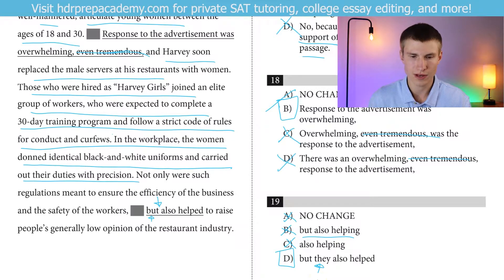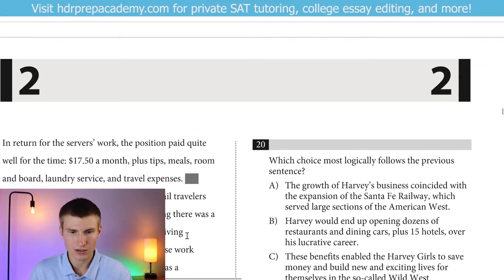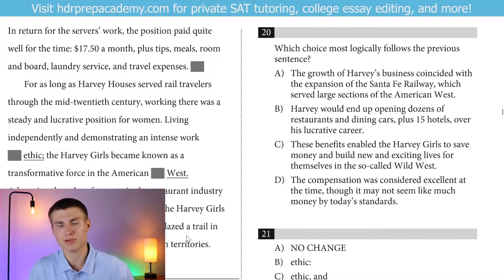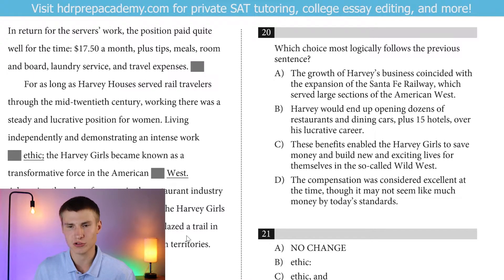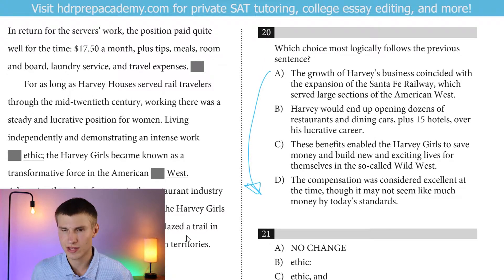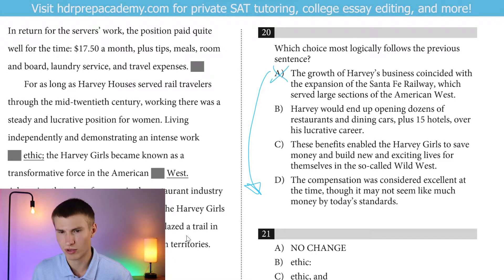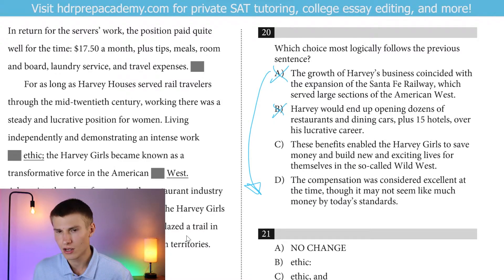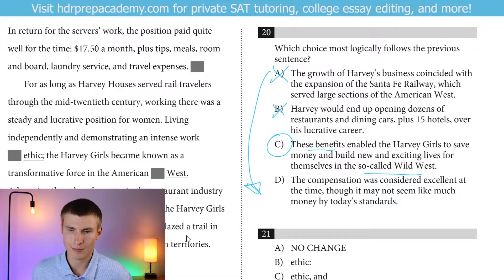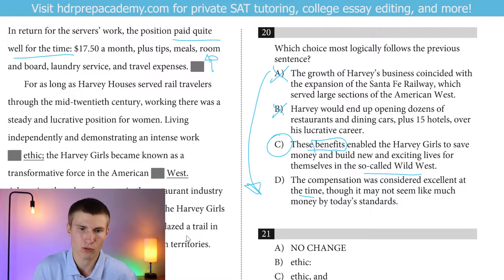An important part of this is that there's a comma and one of the FANBOYS — that's what makes it grammatically correct. For question 20: 'In return for the servers' work, the position paid quite well for the time — $17.50 a month, plus tips, meals, room, board, laundry service, and travel expenses.' Which choice most logically follows the previous sentence? The growth of Harvey's business coinciding with the Santa Fe Railway — no, we want to focus on Harvey Girls. Harvey opening dozens of restaurants — no. Option C: 'These benefits enabled the Harvey Girls to save money and build new and exciting lives for themselves' — yes, focusing on the Harvey Girls and what this compensation meant to them. Option D would be redundant — we were already told it paid quite well.